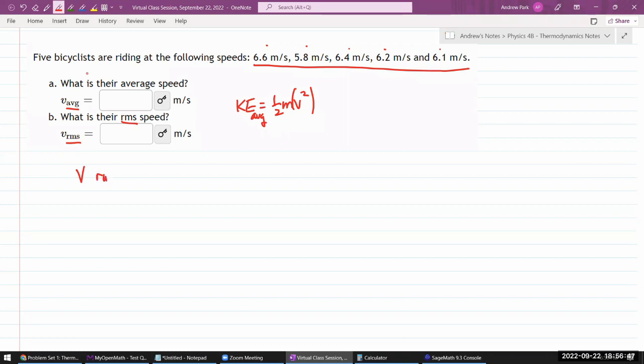So when we talk about V RMS, each of these letters stand for something. R stands for root, M stands for mean, and S stands for square. And you kind of think of this as operations, starting with the one on the right. You square them first, you take the mean or average, and you take the root or the square root.